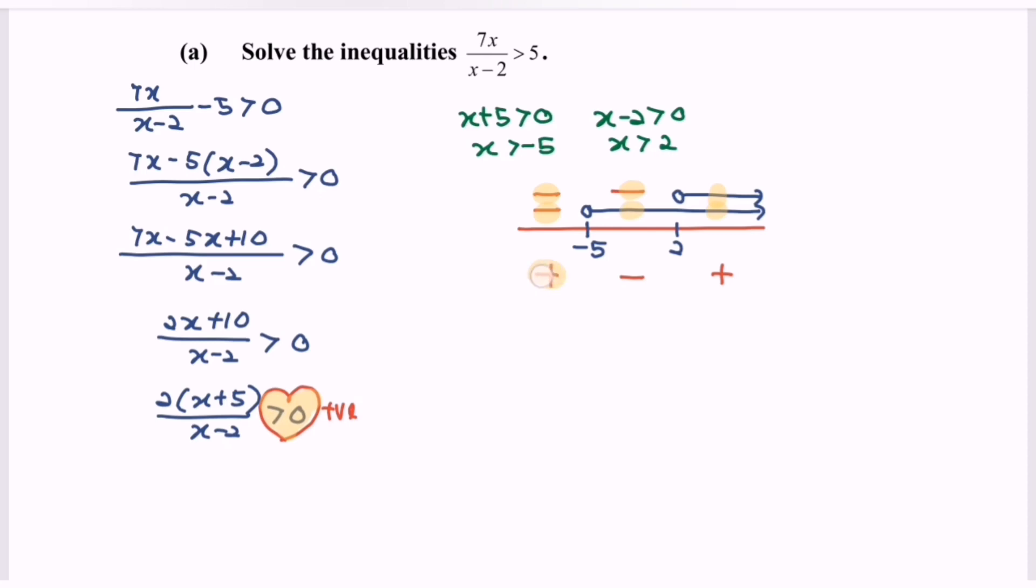Kindly express the answer in the interval form and the solution. So we will have x and negative 5, x and 2. Notice that we have less than negative 5 and greater than 2. So for the solution set, we need to have all x such that x less than negative 5 or x greater than 2. This will be the solution set.